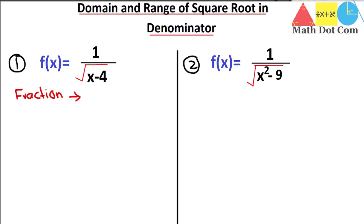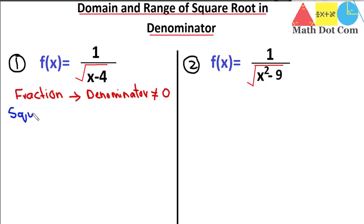So the denominator here is x minus four. The first condition is: the denominator of the function should not be equal to zero. The second condition is on the square root: when you have a radical sign, you cannot have negative values inside it. For that purpose, you compare the expression inside the square root with greater than or equal to zero.